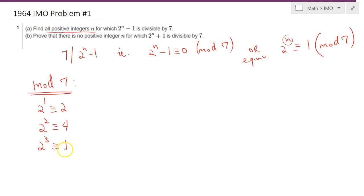That's exactly what we needed, so n equals 3 works. Then 2 to the fourth power is 2 times 2 cubed, but 2 cubed was 1, so that's just 2.